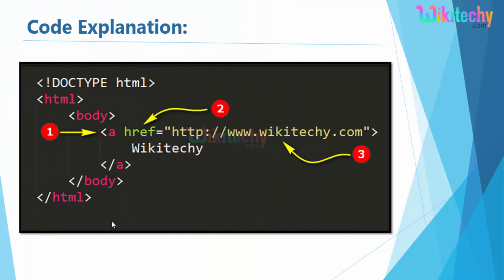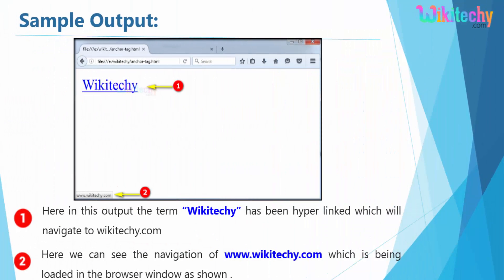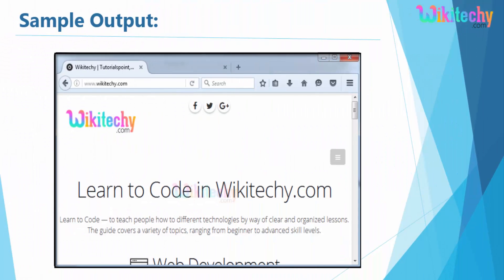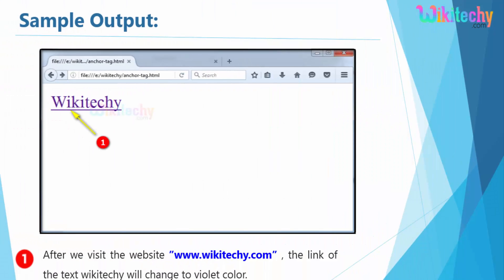Here is the explanation. The anchor tag is used for representing hyperlinks. href is used to define the URL path or link, and we are navigating to www.wikiteki.com — it is a global link URL. Here is the output — you are able to see the display text, and on clicking it you will be navigated to wikiteki.com. The violet color of the link indicates that the link has been visited.